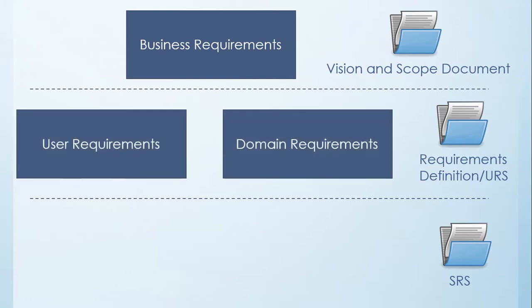At the next level you have user requirements and domain requirements. User requirements are about capturing the feature set and the types of things users need to be able to do. Domain requirements are about the application space — for example, if you're building a medical database, there may be ethical or legal standards that say certain information must be protected by specific security features and cannot be shared between subsystems in certain ways. This kind of information is captured in what's called a requirements definition document, sometimes called a user requirement specification document, but the requirements here can be open to interpretation.